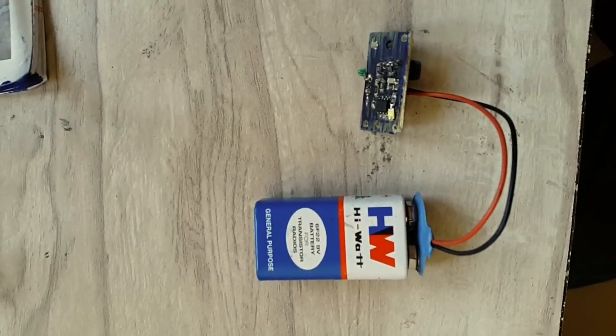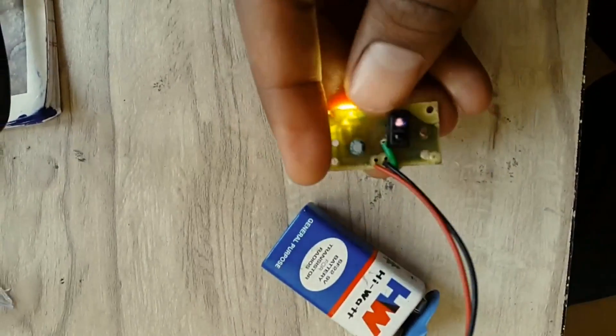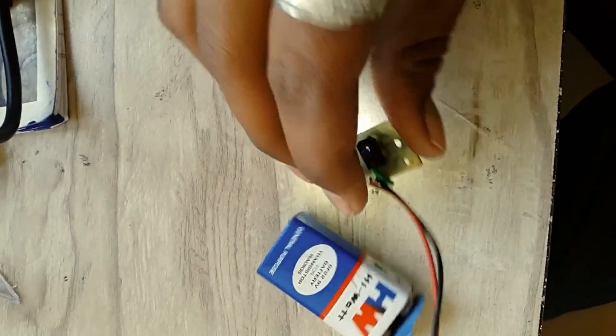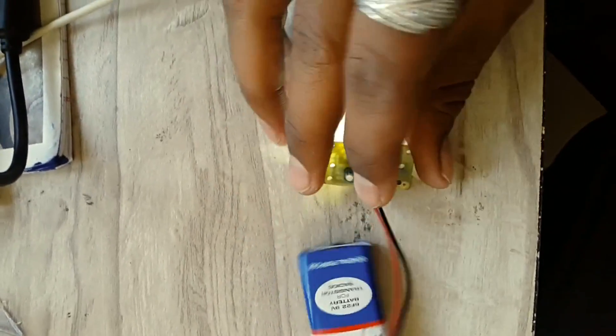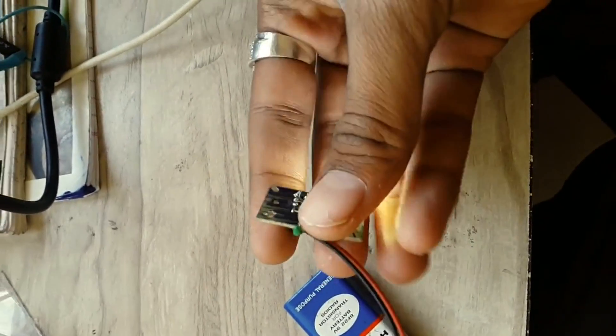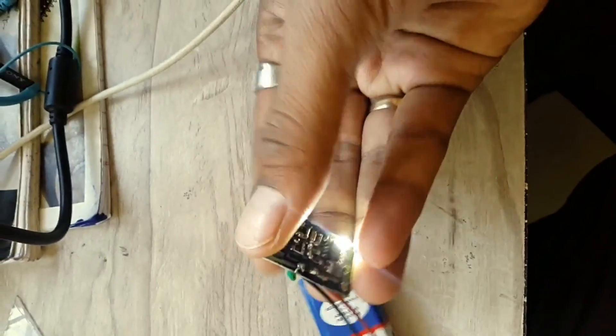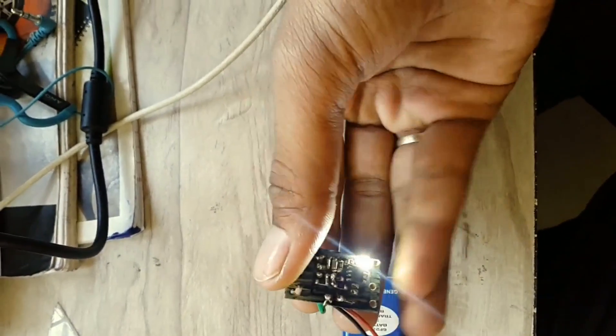Let's connect the battery and test this circuit. Place your index finger in the proximity sensor and make sure that your hand is steady, otherwise the LED will blink randomly.